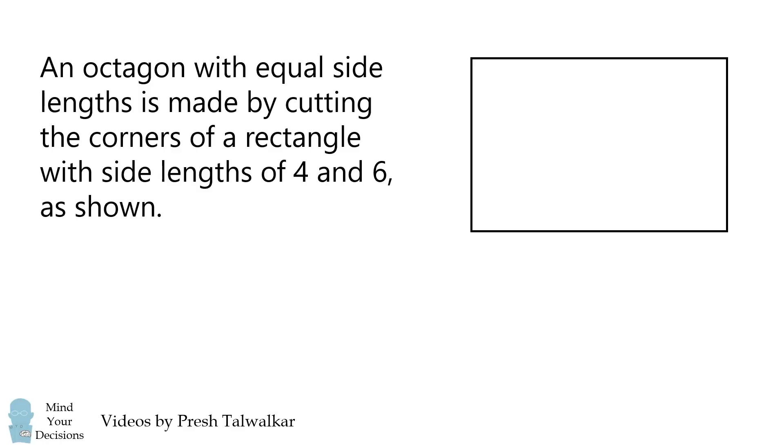An octagon with equal side lengths is made by cutting the corners of a rectangle with side lengths of 4 and 6 as shown in the diagram. What is the side length of the octagon?